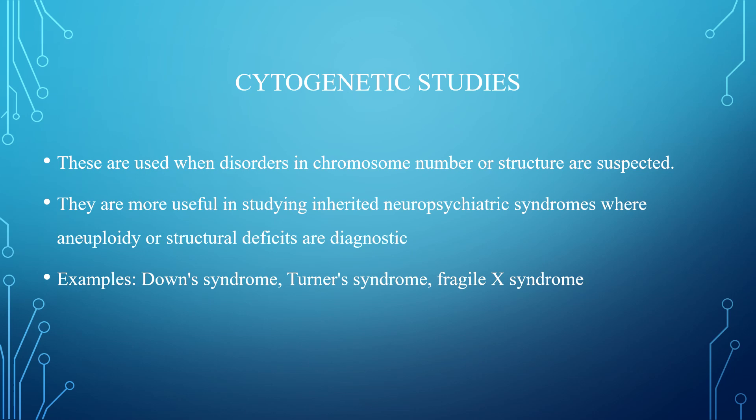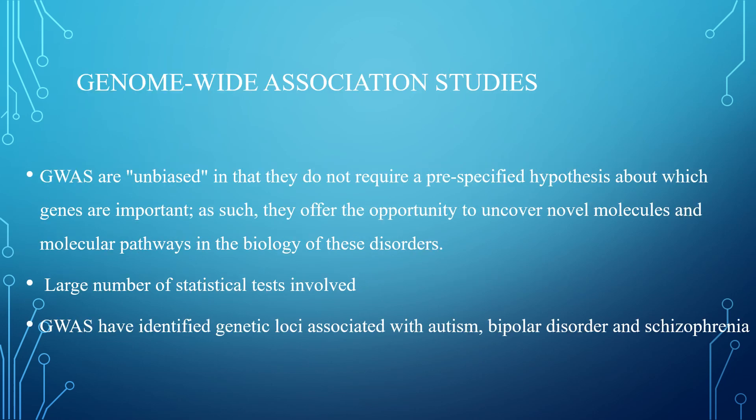Cytogenetic studies are used when disorders in chromosome number or structure are suspected. They are more useful in studying inherited neuropsychiatric syndromes where aneuploidy or structural defects are diagnostic, for example Down syndrome, Turner syndrome, or Fragile X syndrome. Genome-wide association studies (GWAS) are one of the most important and used studies. They are unbiased in that they do not require a pre-specified hypothesis about which genes are important, offering the opportunity to uncover novel molecules and molecular pathways in the biology of disorders. Large numbers of statistical tests are involved. GWAS have identified genetic loci associated with autism, bipolar disorder, and schizophrenia.